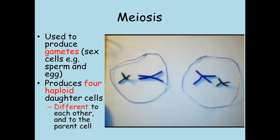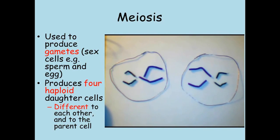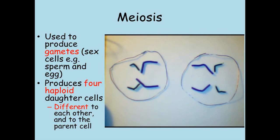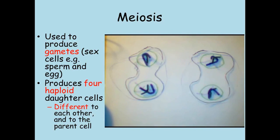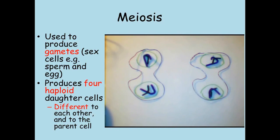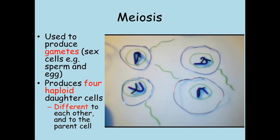In each of these two cells, the chromosomes line up again before being pulled apart to each side and a new nucleus forms in each of the four cells. Each of these cells contain just one set of chromosomes, so they're haploid. They're also all different to each other.